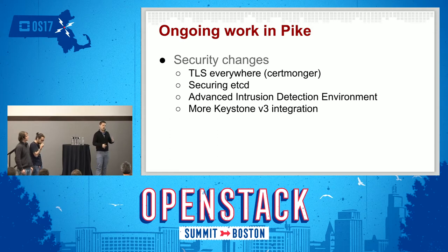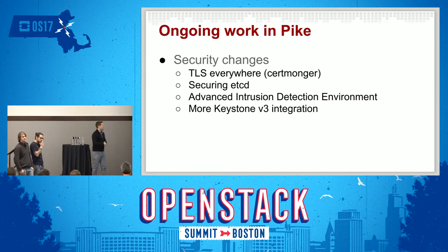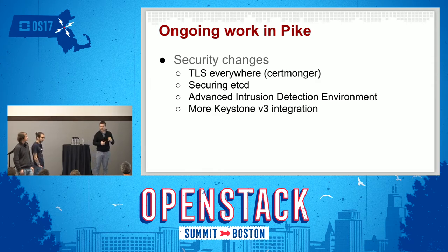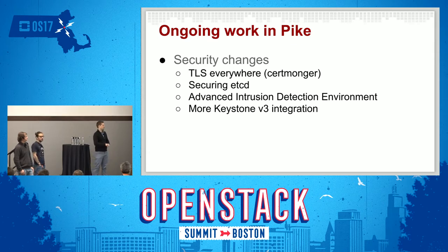etcd is going to be used more in TripleO and in OpenStack over the next cycles. This is something we're trying to focus on and secure before moving the service into production and wide use. We also have people working on advanced intrusion detection environments, introducing these new services in TripleO so users can run audit tools. In Pike, we aim to deploy all OpenStack services using the Fernet token plugin, which uses the Keystone V3 API — enabling all the V3 features in Keystone.